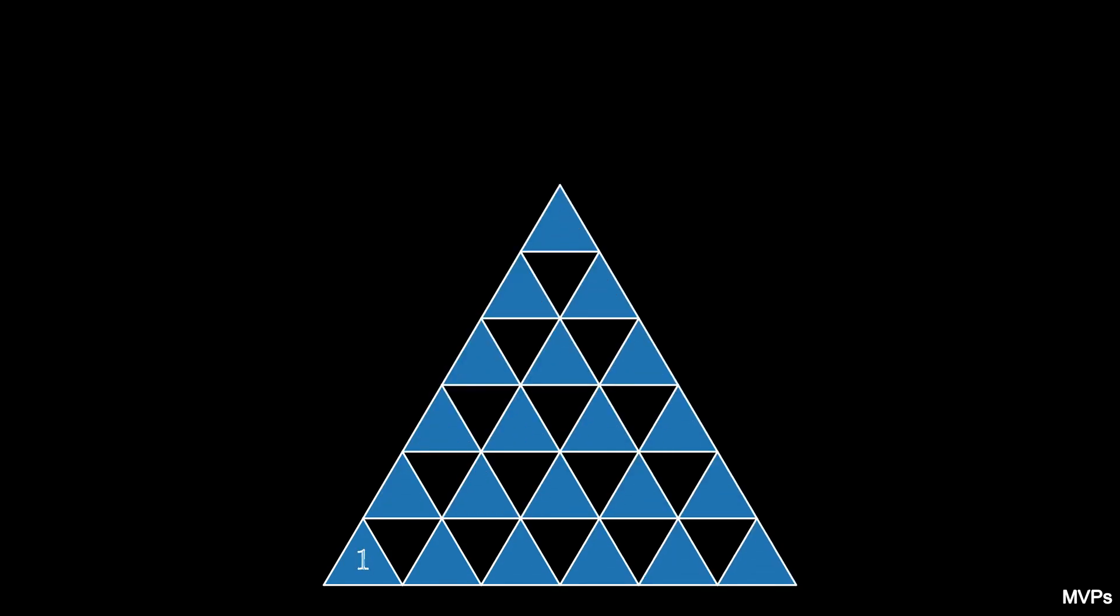Imagine placing one token in the first triangle for one-squared tokens. Then place two tokens in each of the triangles in the second diagonal, adding two-squared tokens. Place three tokens on each of the three triangles in the third diagonal, adding three-squared total tokens.